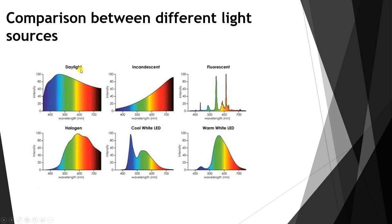Here are examples showing spectral distributions for daylight, incandescent, fluorescent, halogen, cool white LED, and warm white LED. The vertical axis represents intensity and is correlated with the CRI at each color range. Daylight has a high value across almost all colors. Incandescent has high values in the red range but lower values across others.